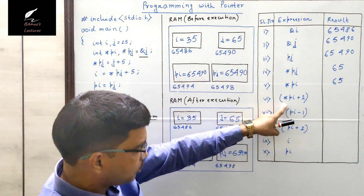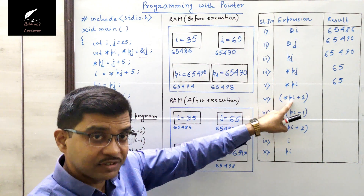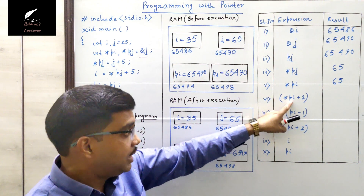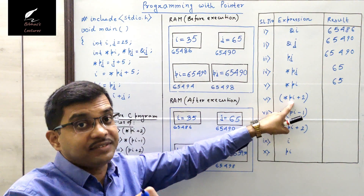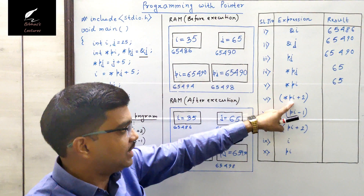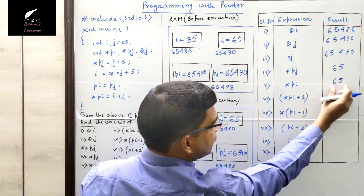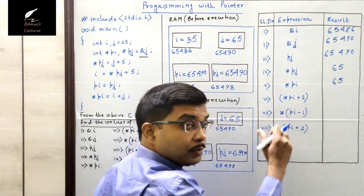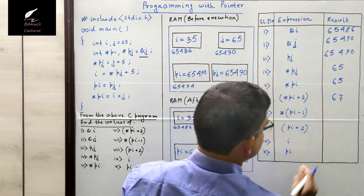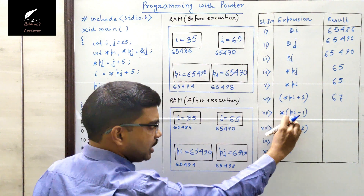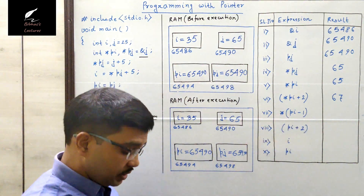Now number six: asterisk pj plus 2. Asterisk pj is the value present at that address, which we just found is 65. So asterisk pj plus 2 equals 65 plus 2, which is 67.